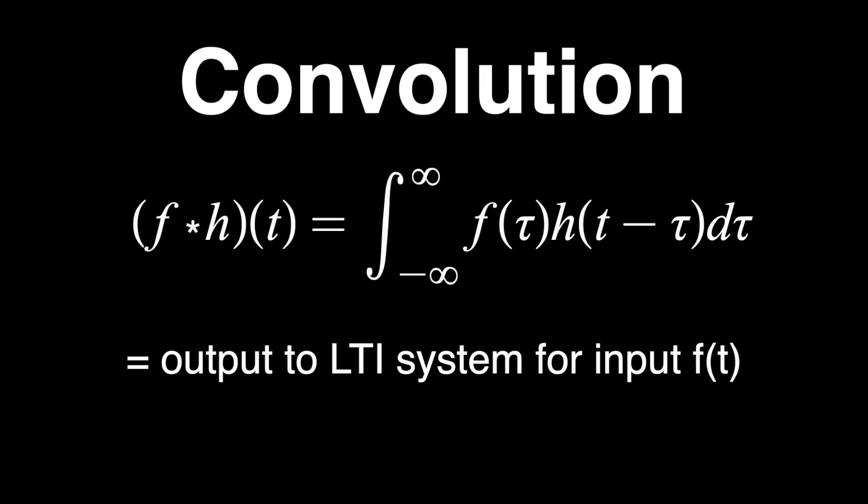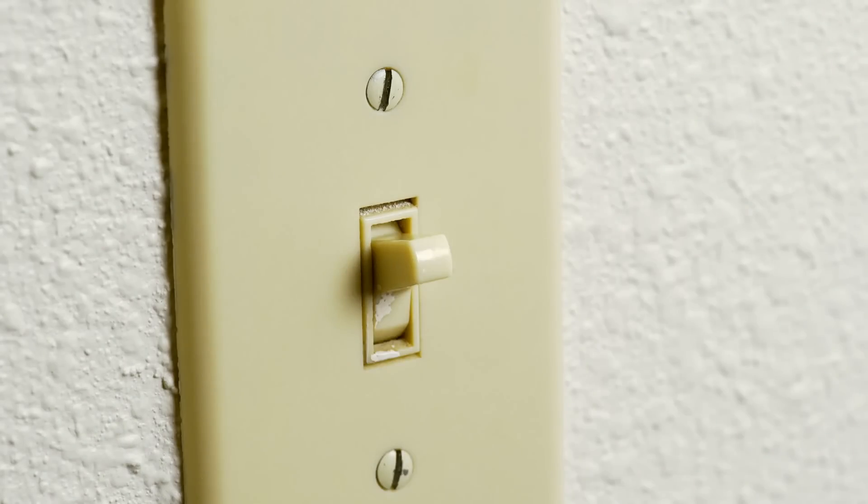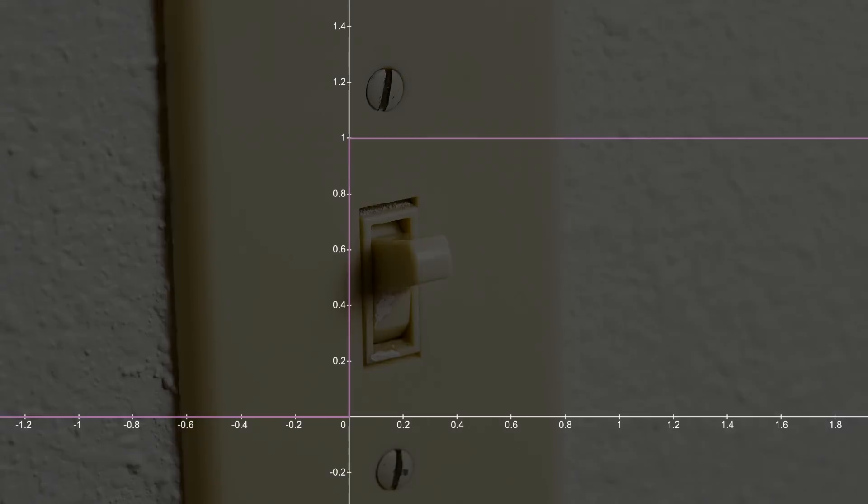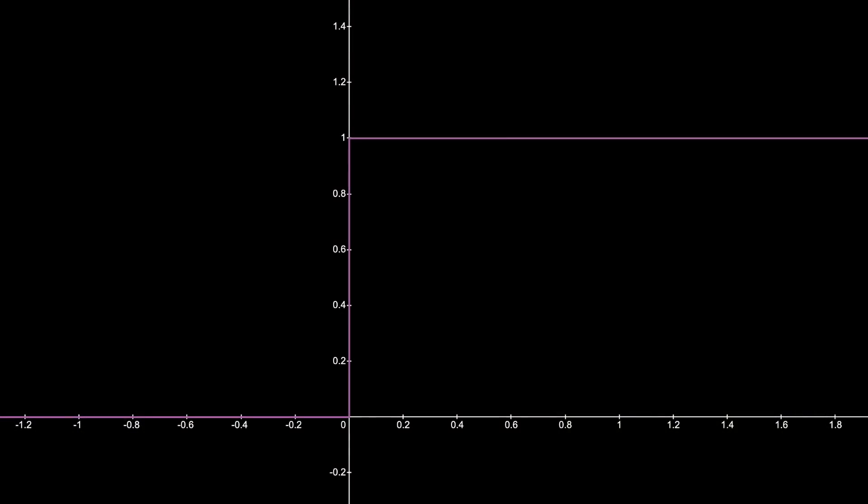But wait, there's a little more, because the Dirac delta function comes up in sneaky ways sometimes. As I said, often in engineering you think of inputs to systems as turning on. Flipping a switch that turns on a circuit might look like this, where it immediately goes from zero volts to one volt in this case. This is known as the step function u of t.